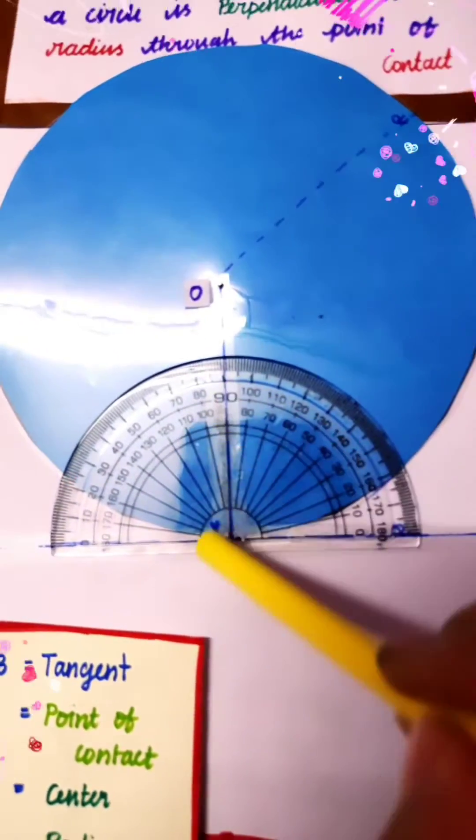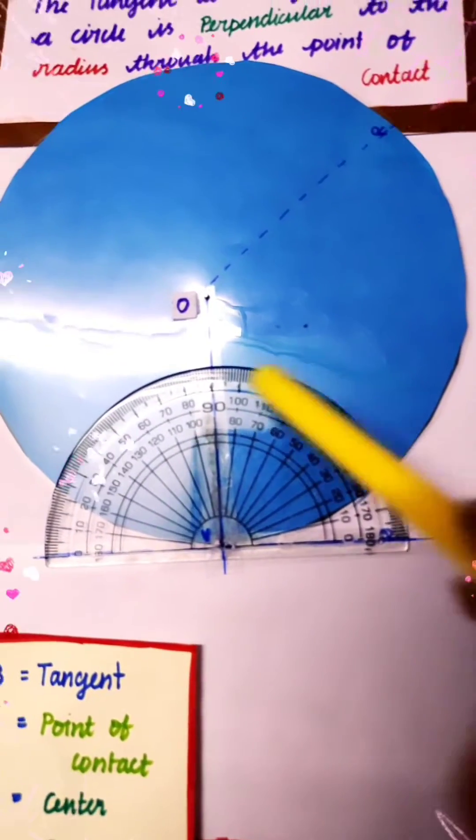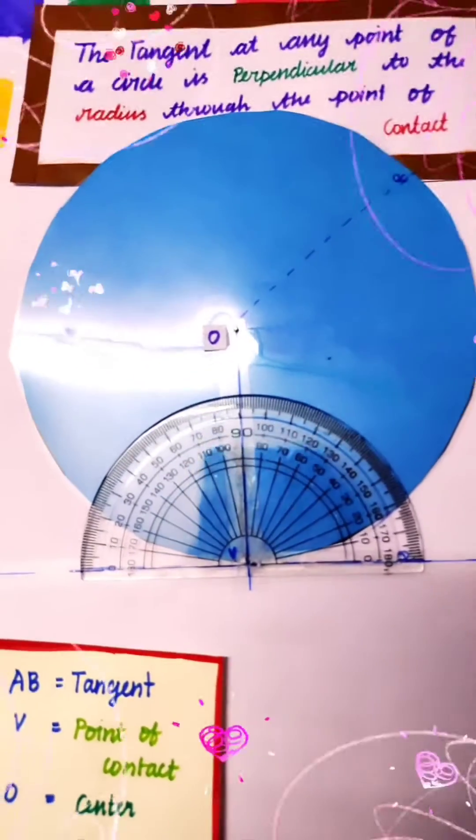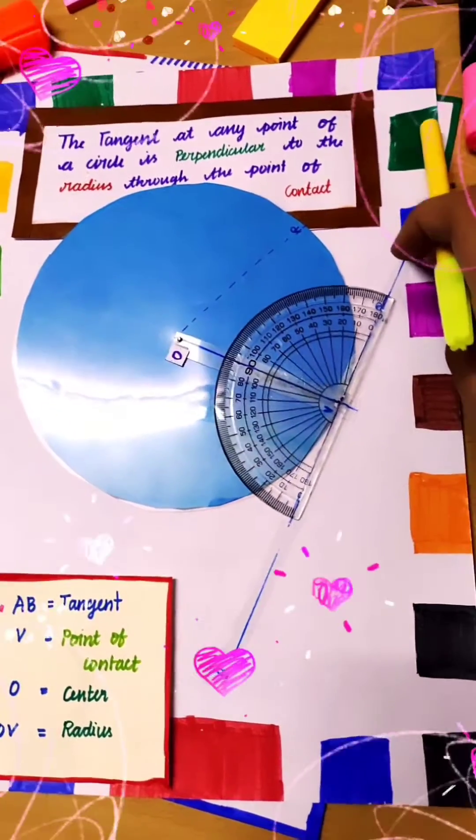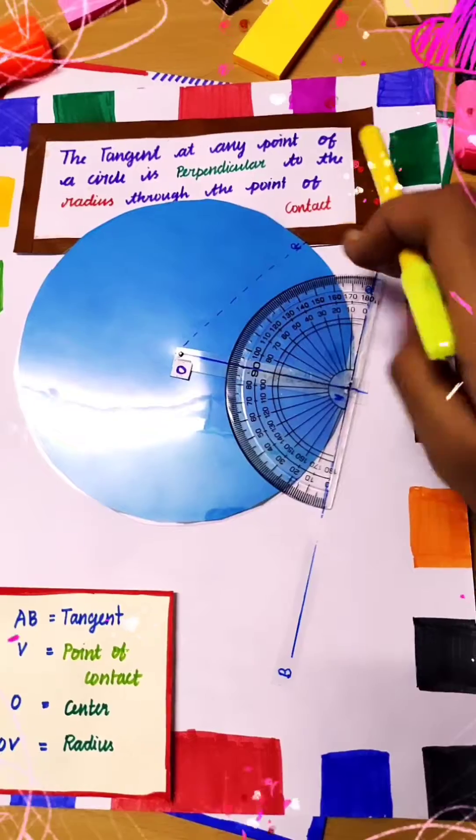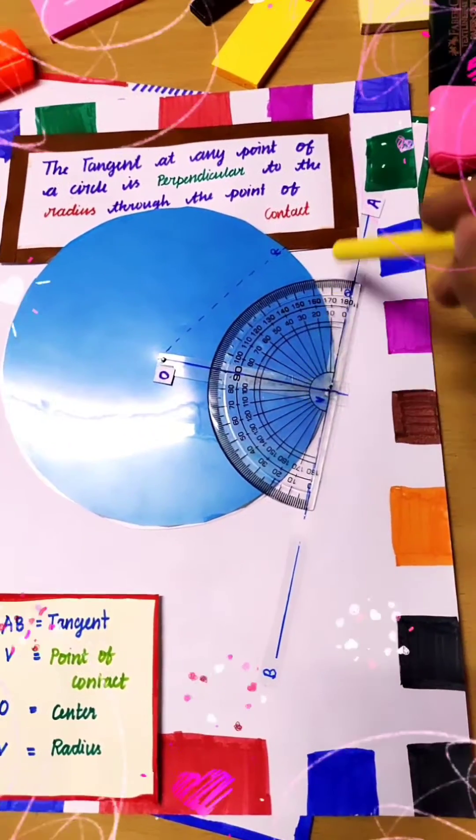Can you all see the 90 degrees here on the protractor? Zero to 90 degrees, so the angle is 90 degrees. Now when we move this, we can also see that wherever the tangent is, the angle between the radius and the tangent